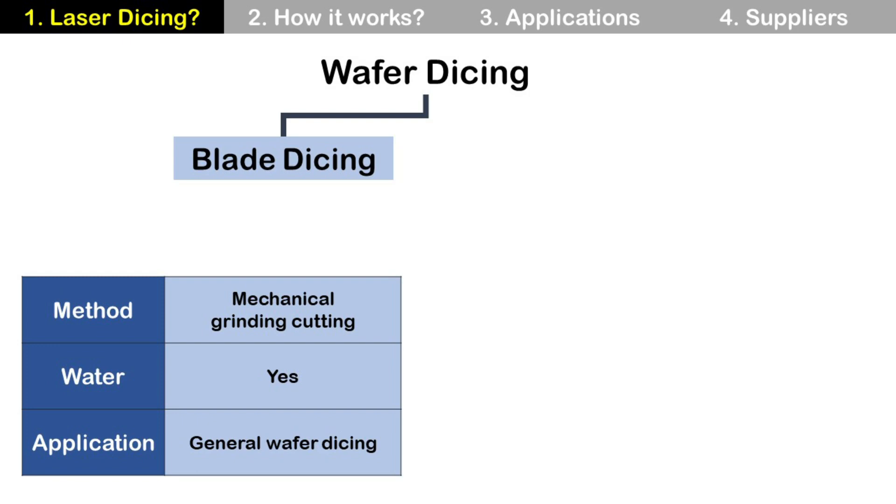First method is blade dicing. It is the most popular method and uses sawing blade, which we already talked about before. It is mechanical cutting technology with contact between blade and wafer. It generates heat and wafer debris, so requires water for cooling and debris cleaning. This method is used for most wafers.